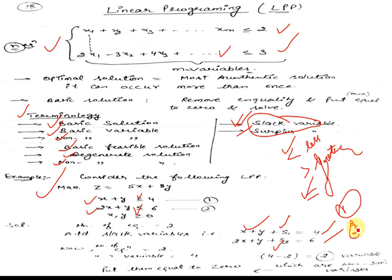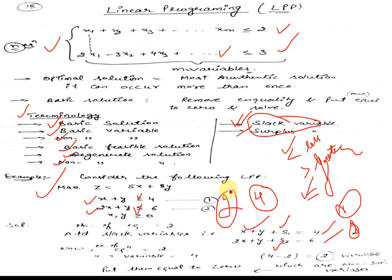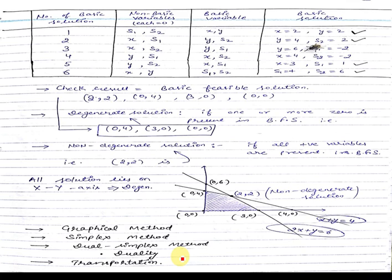Now, how many equations are there? Two equations. How many variables are there? Four variables: x, y, s1, s2. How to calculate the number of non-basic variables? Just calculate the difference between the number of variables and the number of equations. The difference is 4 minus 2, which equals 2. So there are two non-basic variables. Which are the non-basic variables? We will be discussing that in the next slide.